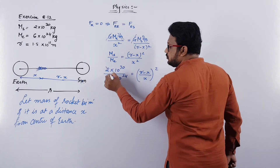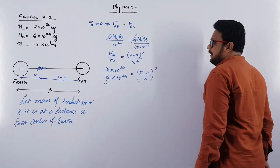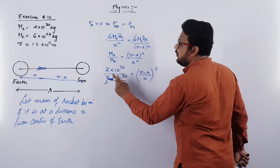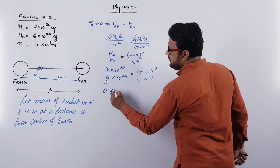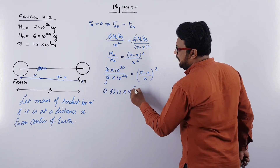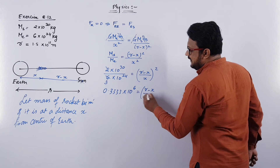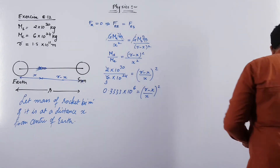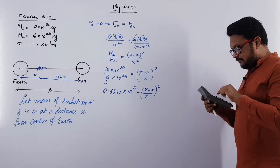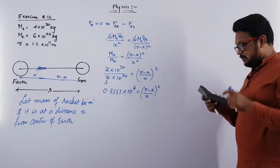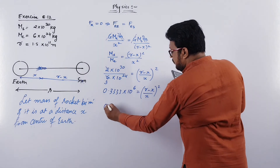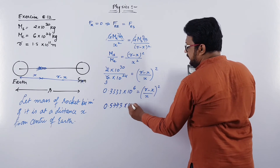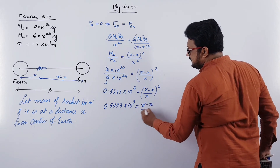So 2 / 6 × 10⁶ equals (r − x)² / x², which gives 0.333 × 10⁶ equals [(r − x) / x]². Taking the square root of 0.333 × 10⁶ gives approximately 577.3, so (r − x) / x equals 577.3.